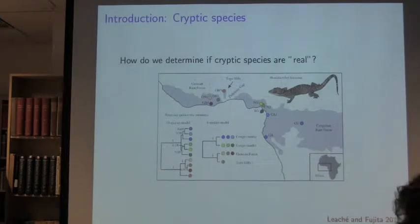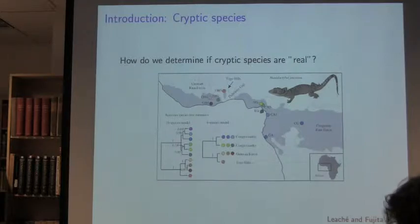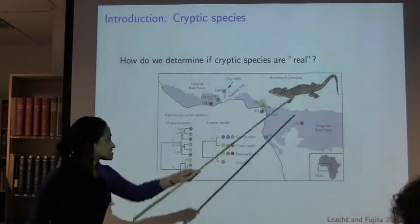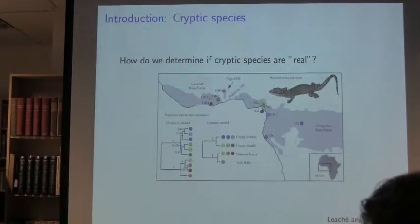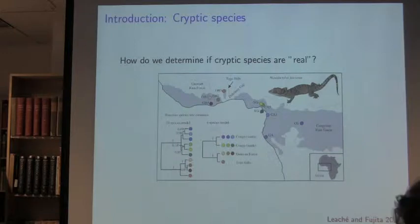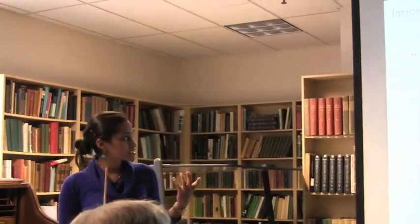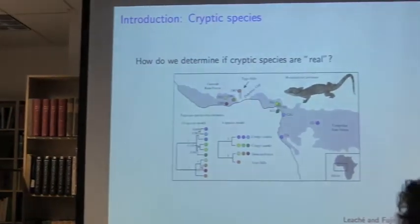One of the questions interesting to me is how do we determine if cryptic species are real? Are these just genetic lineages blinking in and out of time, or is there something concrete about them worth giving a name? This is from a paper by Lachey et al. from the MVZ, published in 2011, where they used Bayesian species delimitation to define within a widespread morphospecies — this gecko, Hemidactylus — new species. All these lineages were morphologically cryptic, had marked genetic differentiation, and the only thing that defined them was that they were in different geographic localities.